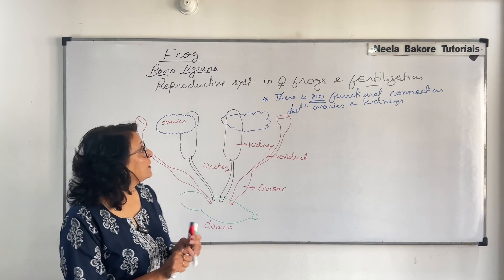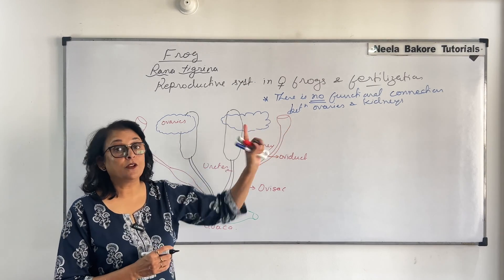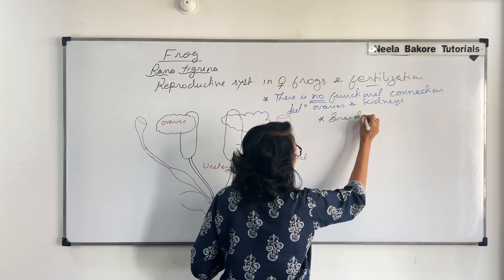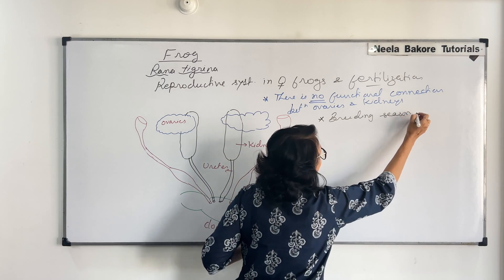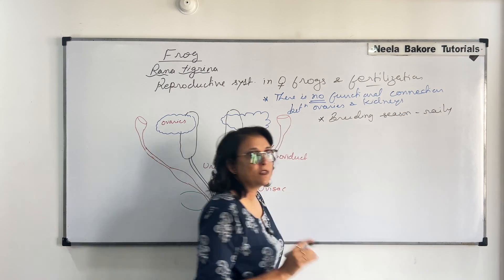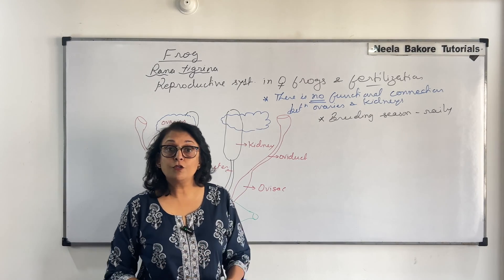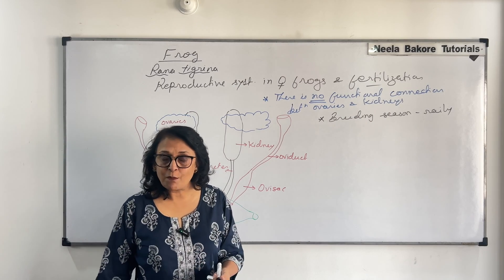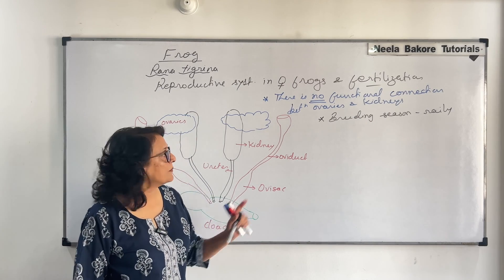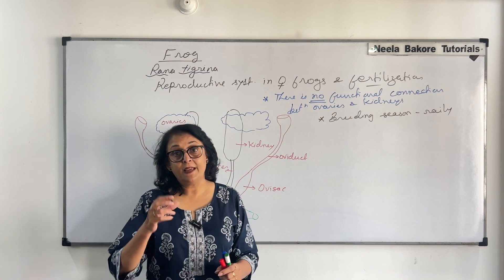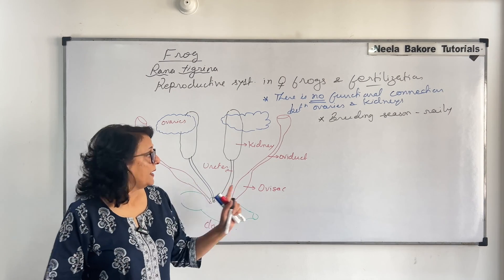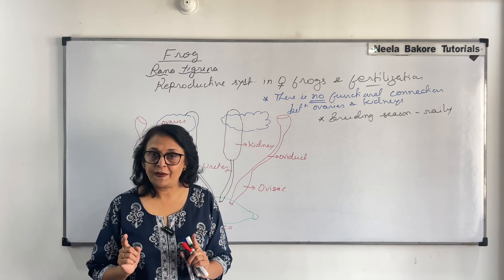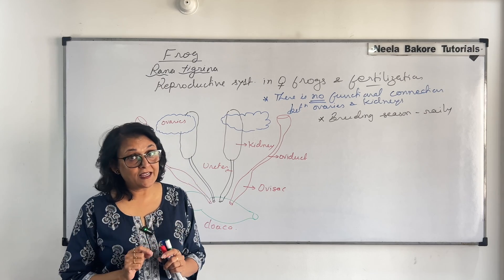In female frogs, the breeding season is the rainy season. During summers and winters, frogs go into summer sleep and winter sleep — aestivation and hibernation respectively. During breeding season, when they have to reproduce, copulation takes place because the sexes are separate. This is how fertilization occurs.